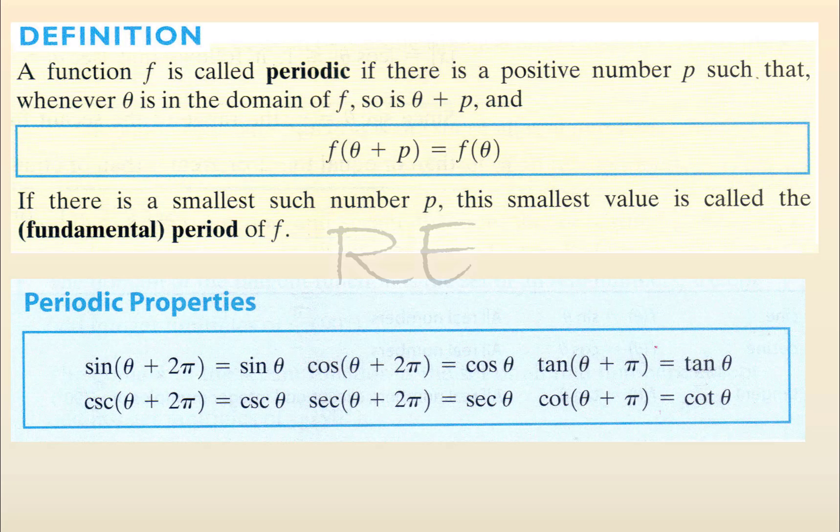A function f is called periodic if there's a positive number p such that whenever theta is in the domain of f, so is theta plus p, and we say f of theta plus p is equal to f of theta.